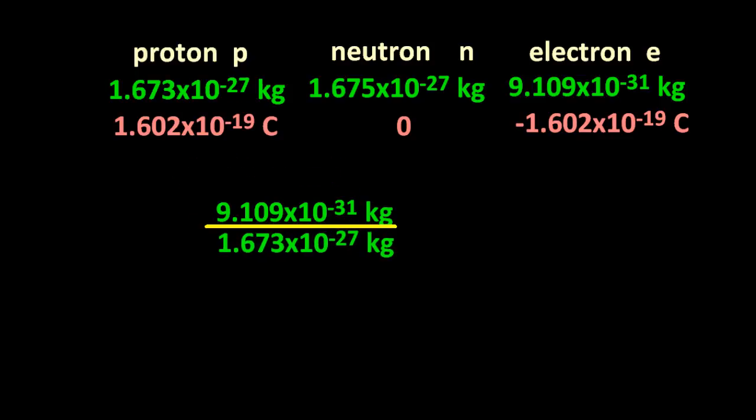A quick bit of maths. So that means if I had 1,836 electrons, it would have the mass of a proton.